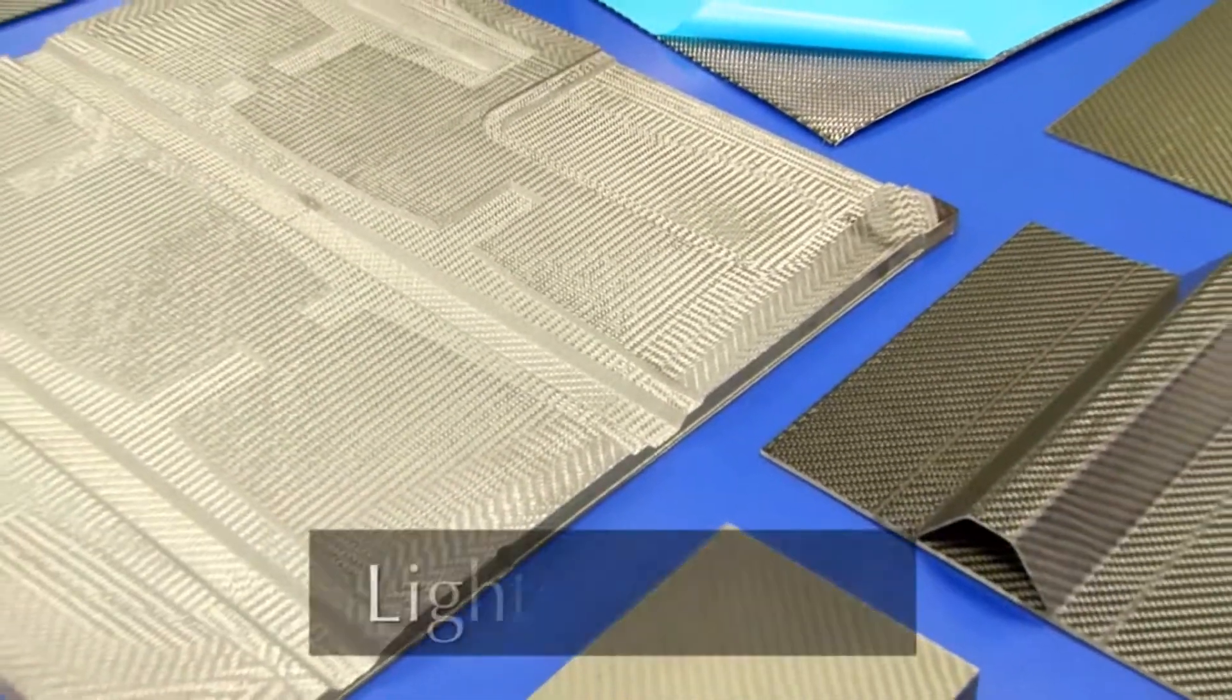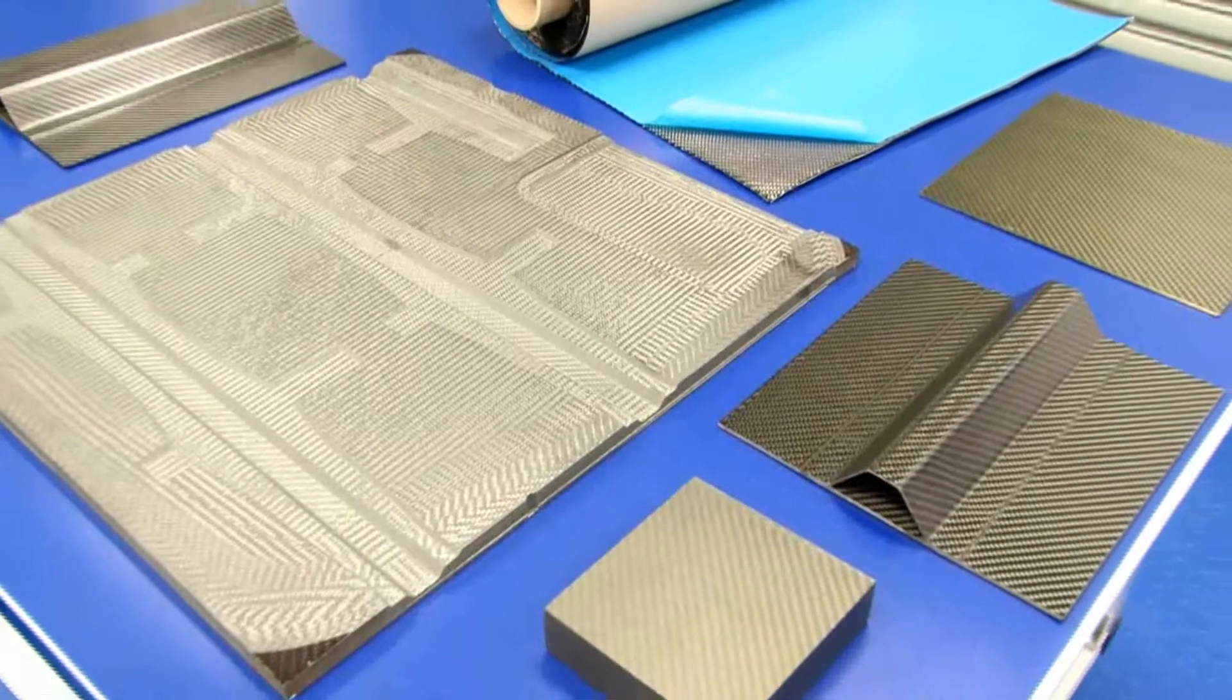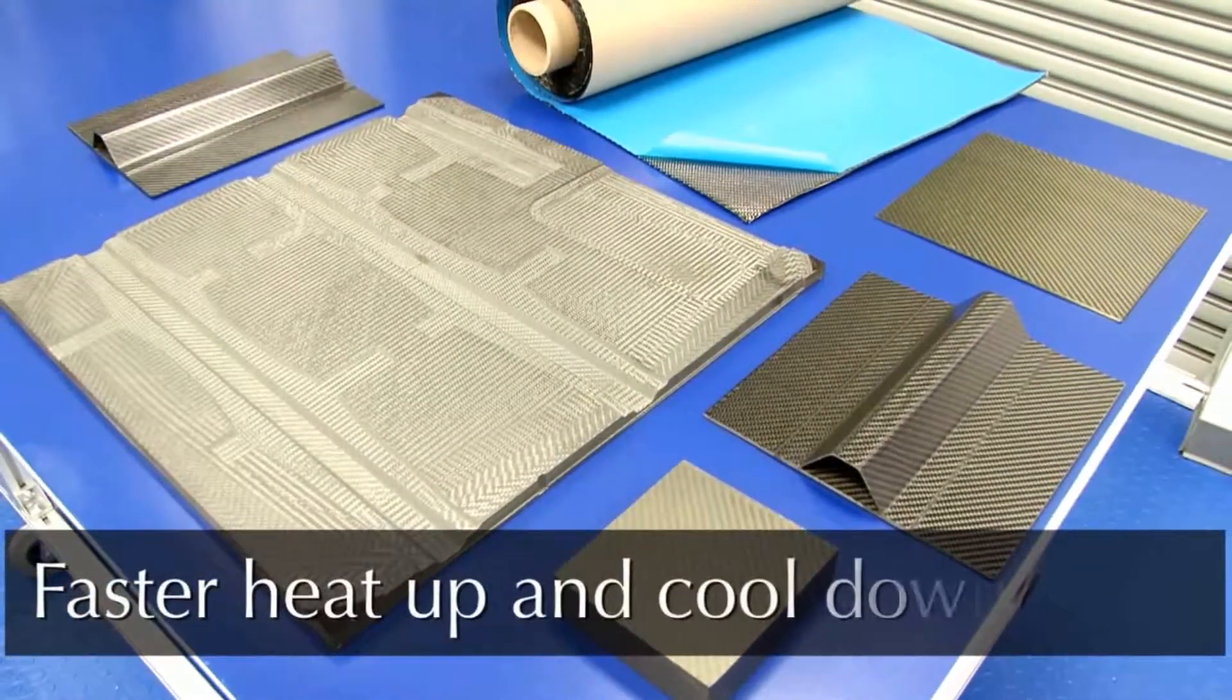In comparison to metallic tools, beta prepreg composite tools are lighter weight for easier manual handling and have faster heat up and cool down rates for reduced production costs.